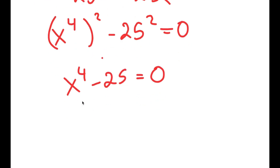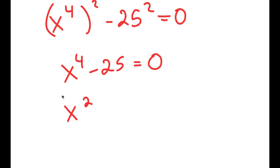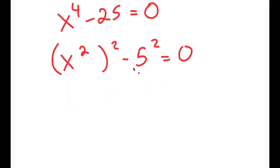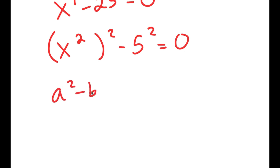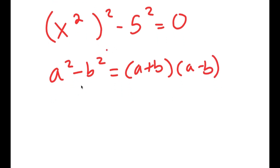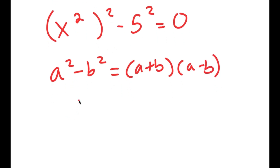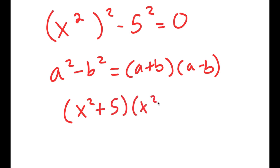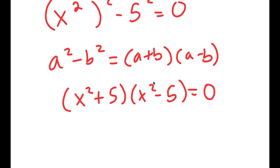Now from here, I'm going to rewrite this as x squared to the power of 2 minus 5 squared is equal to 0. So now I can use the formula a squared minus b squared is equal to a plus b times a minus b on this. So this turns into x squared plus 5 times x squared minus 5 is equal to 0.